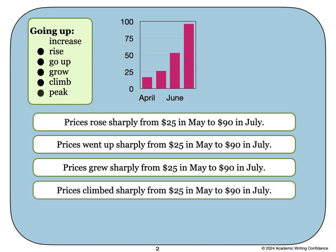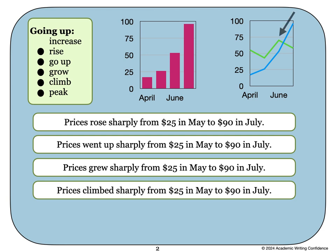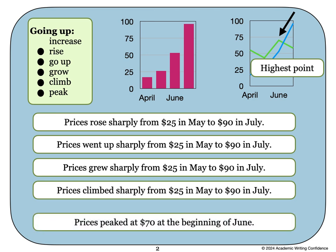The word peak is used to describe something that is at the top of a graph or a chart. For example, in this line graph, you can see that there is a point where the line goes up and then starts going back down. This resembles the peak of a mountain, which is the highest point of a mountain. In this case, we can write a sentence like this: Prices peaked at $70 at the beginning of June.